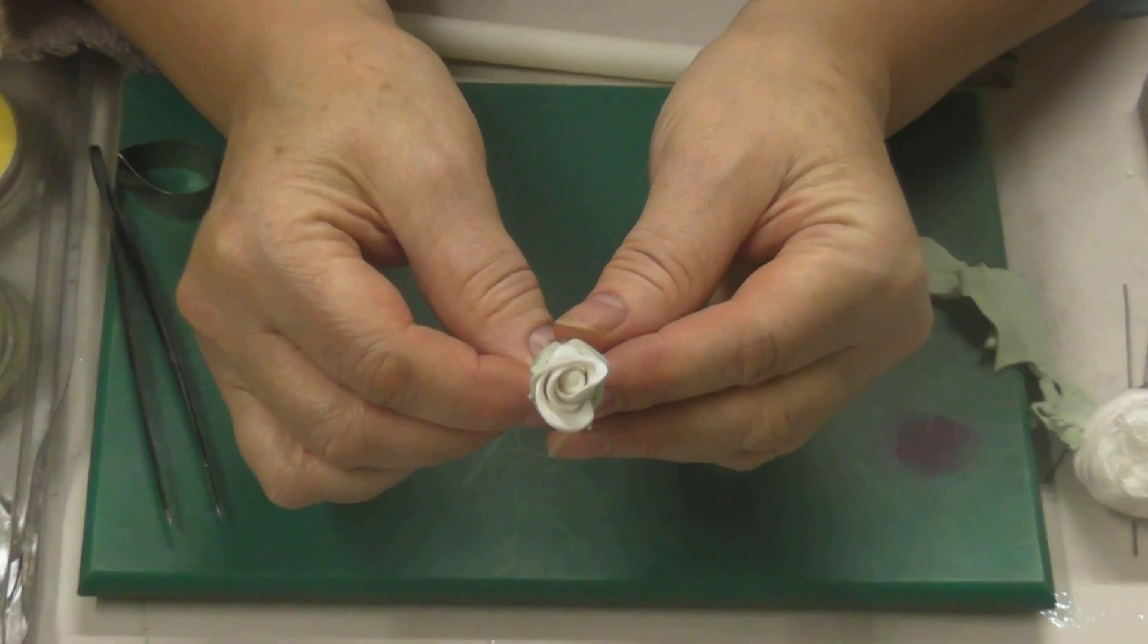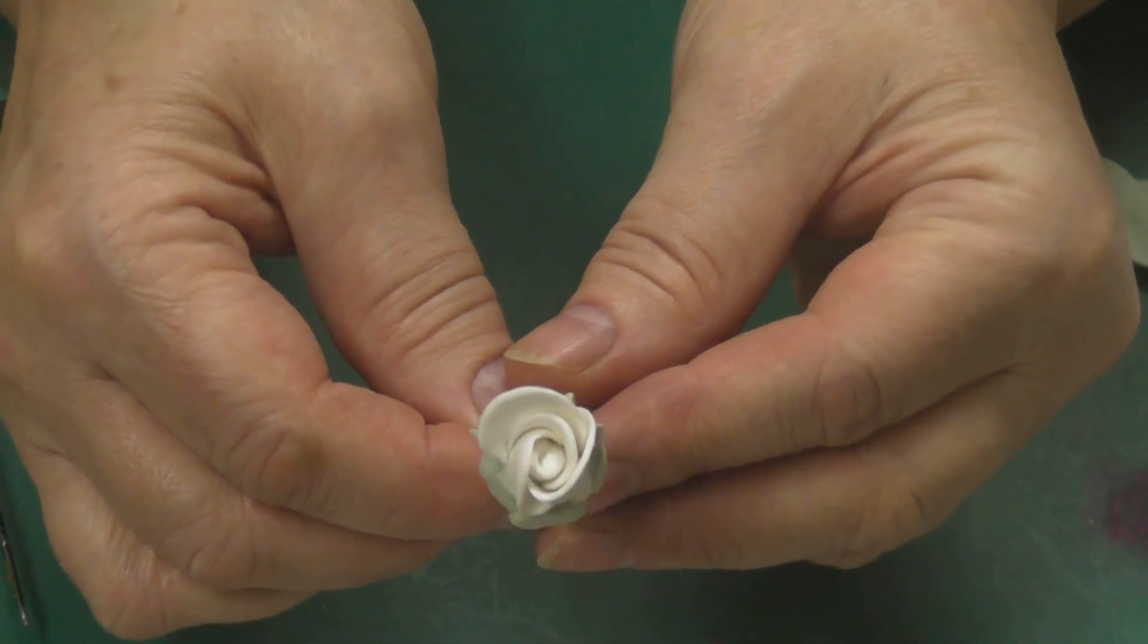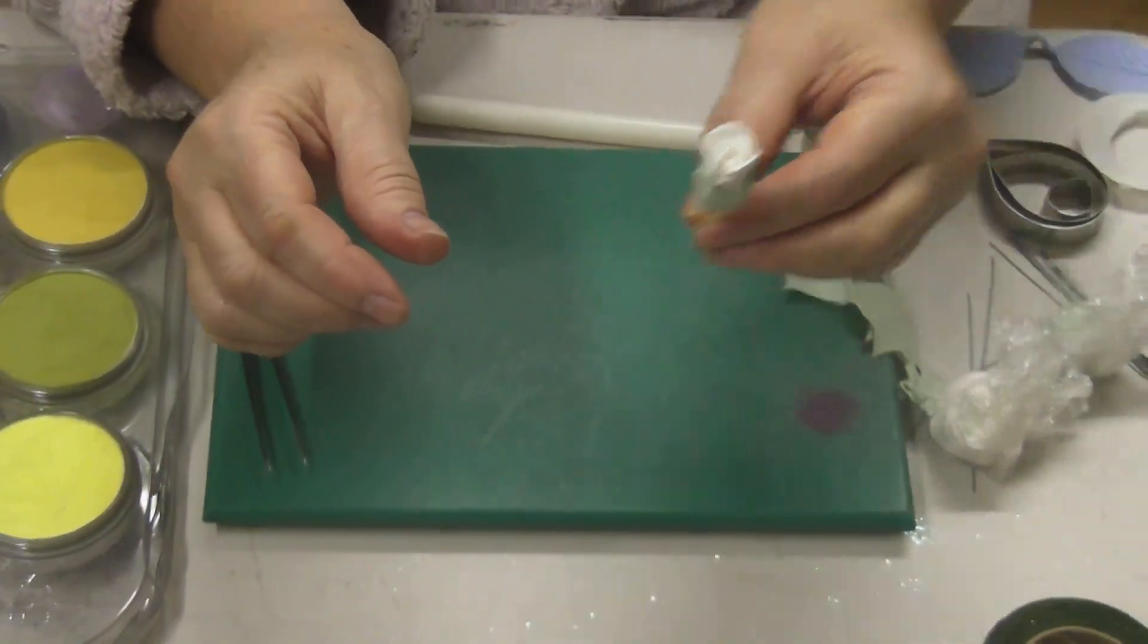So I'm going to show you now how to do a leaf, and then we'll leave it for today and we'll do the coloring at a later date. So that's your rosebud.